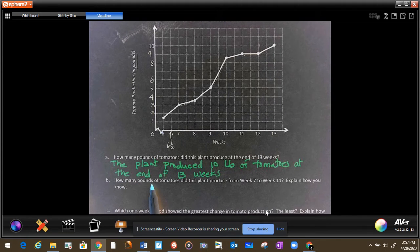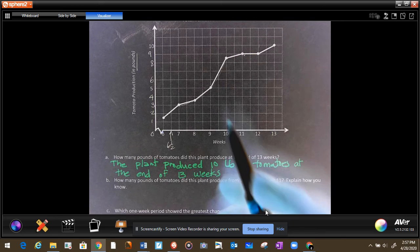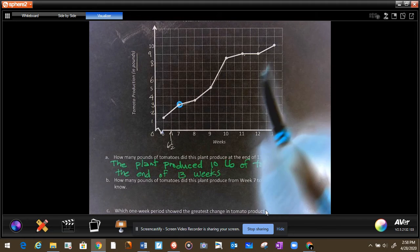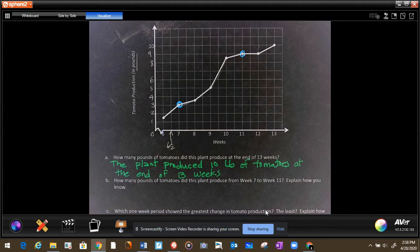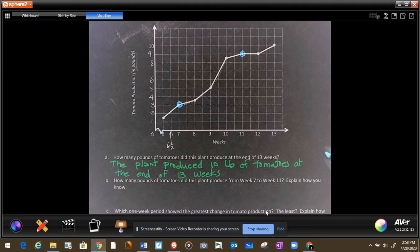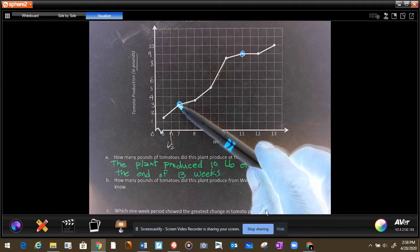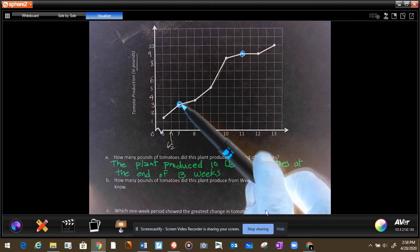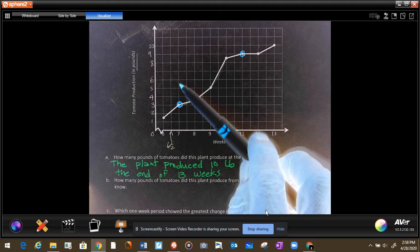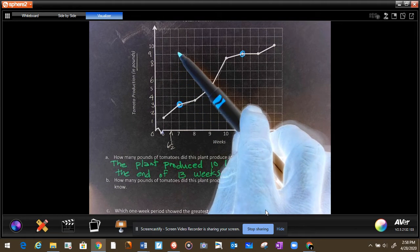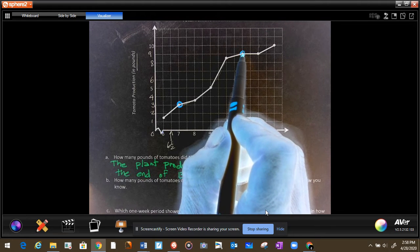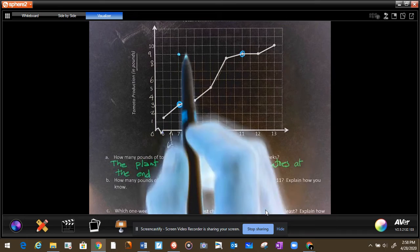How many pounds of tomatoes did the plant produce from week 7 to week 11? So here's week 7, I'm going to circle week 7, and week 11 is right here. So from there to here, how much did it grow? There are several ways you can do this. You can just make a straight line right here and you will see how many did it go up. Now we can also count up like this. 1, 2, 3, 4, 5, 6 pounds.